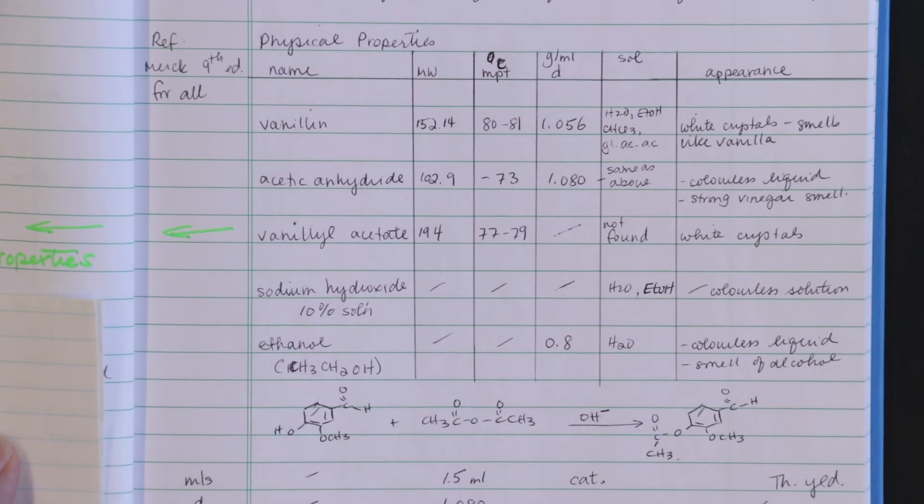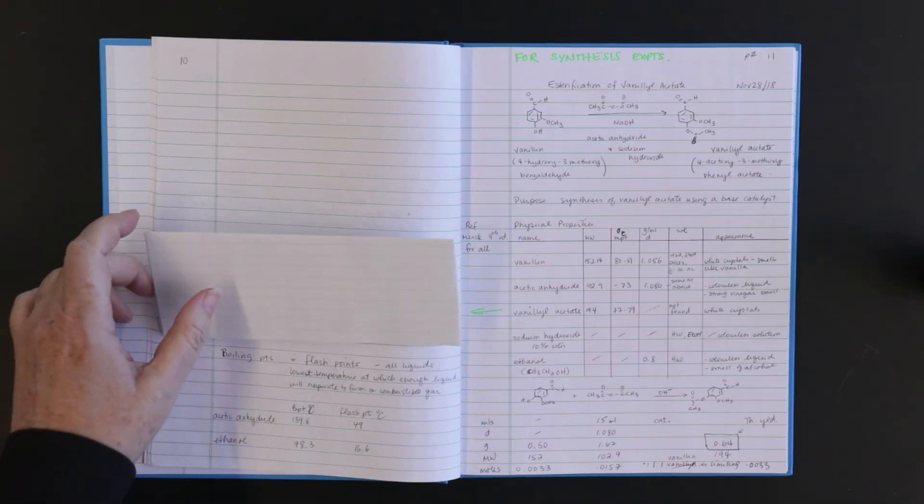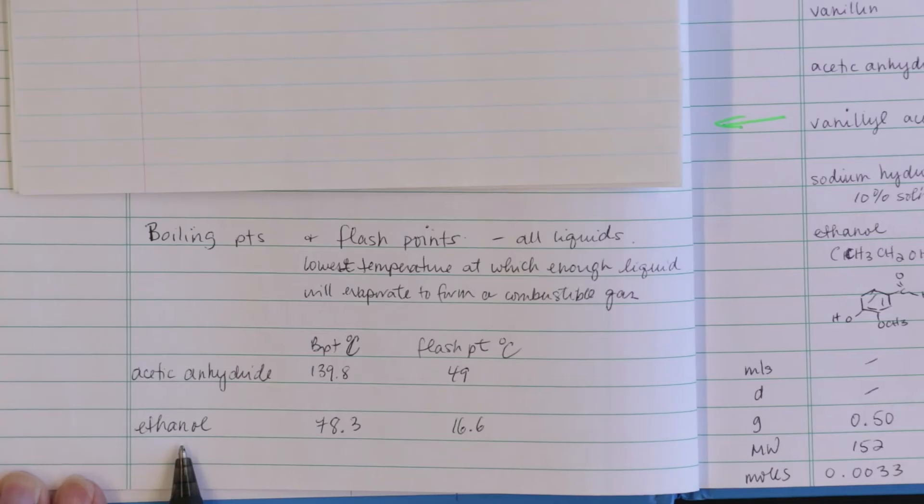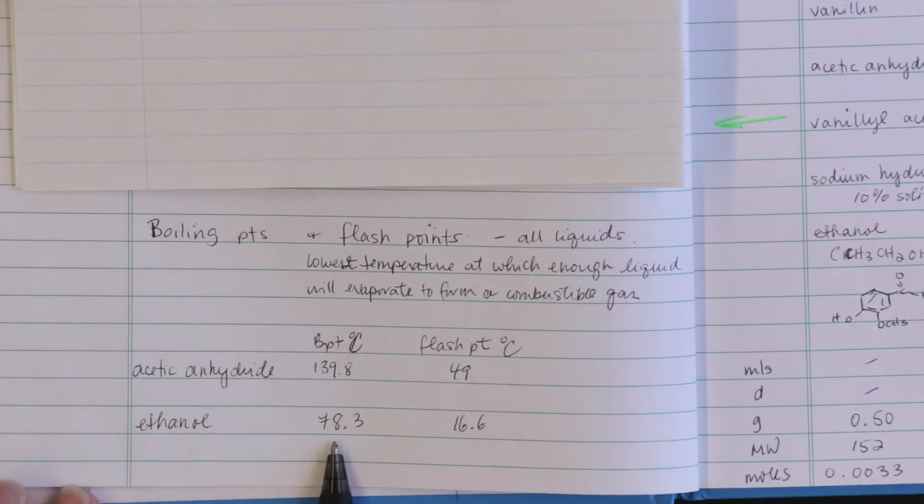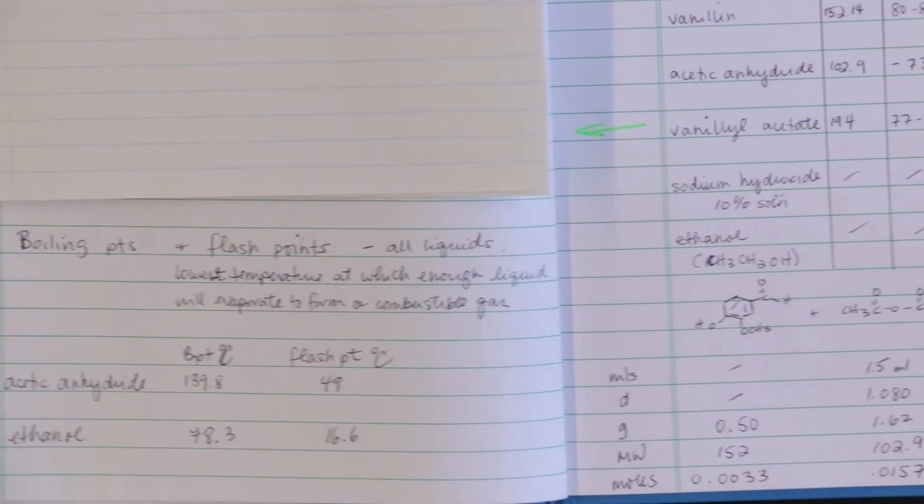Is there something missing from this table? What I have missed is boiling points and flash points. These must be shown for all liquids. The flash point is the lowest temperature at which enough liquid will evaporate to form a combustible gas. For ethanol the boiling point is 78.3 degrees Celsius. The flash point is 16.6 degrees Celsius. This could cause a danger in the lab if there is a spark, so it is very important to know.